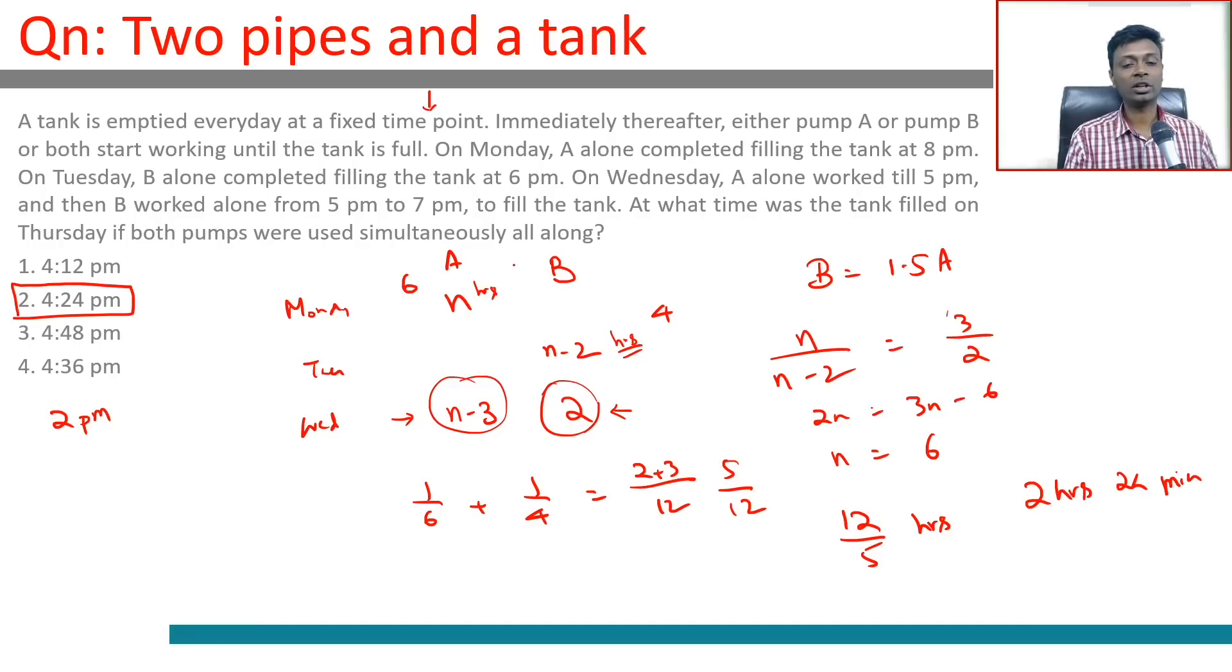The breakthrough here is in figuring out that the ratio of efficiency, the rate at which they fill, B is to A is three is to two. Once you've done that, the whole question becomes very easy.